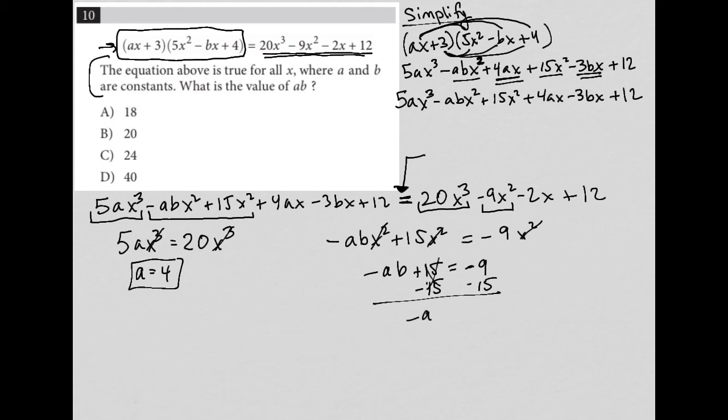And I have negative AB equals negative 24. I know that A is four. So this becomes negative four B equals negative 24. I can divide by negative four. And I'm left with B equals positive six.